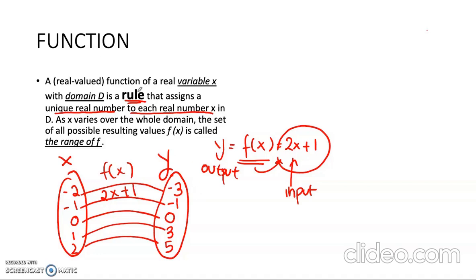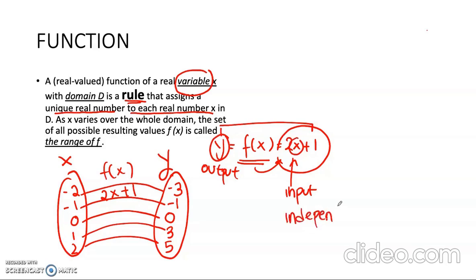So a function is a rule. Another important term I would like to discuss is about the term variable. From this function, we have two types of variable: y and x. As I said before, x is an input — because it's an input it is independent, it's an independent variable — while y is an output. So y is an output which is dependent on x through the rule. That is why we can say that y is a dependent variable.